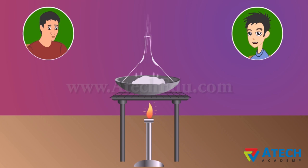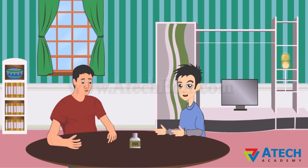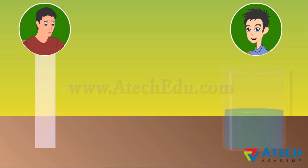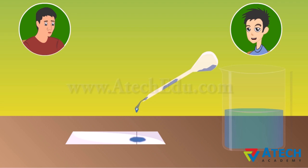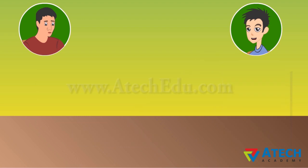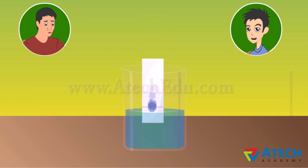Do you know, Abhay, what the dye in black ink is — is it a single color? I'm not sure. Let's find out. Take a thin strip of filter paper and draw a line using a pencil approximately three centimeters above the lower edge. Put a small drop of ink at the center of the line and let it dry. Lower the filter paper into a beaker containing water so the drop of ink is just above the water level, and leave it undisturbed. As the water rises, it carries the dye particles along with it.